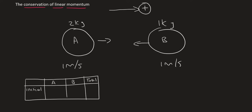For object A, we know that it's got a momentum. Remember, momentum is mass times velocity. So that's going to be equal to 2 times 1, which is just 2 kilogram-meters per second, and that is going to the right.